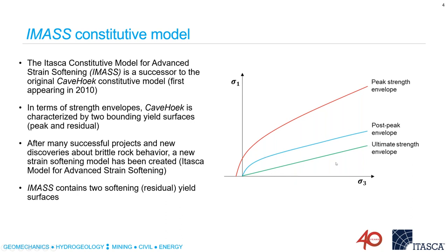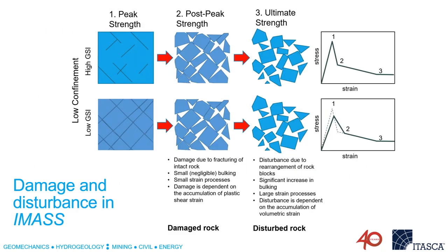The main difference between IMAS and CaveHoek is that IMAS is defined by two residual yield surfaces versus the one that CaveHoek had. We call the first one the post-peak envelope, and the second one is called the ultimate strength envelope, or the true residual strength of the rock mass. In IMAS, softening is captured in two phases: basically between peak strength to post-peak strength, and then between post-peak strength and ultimate strength.